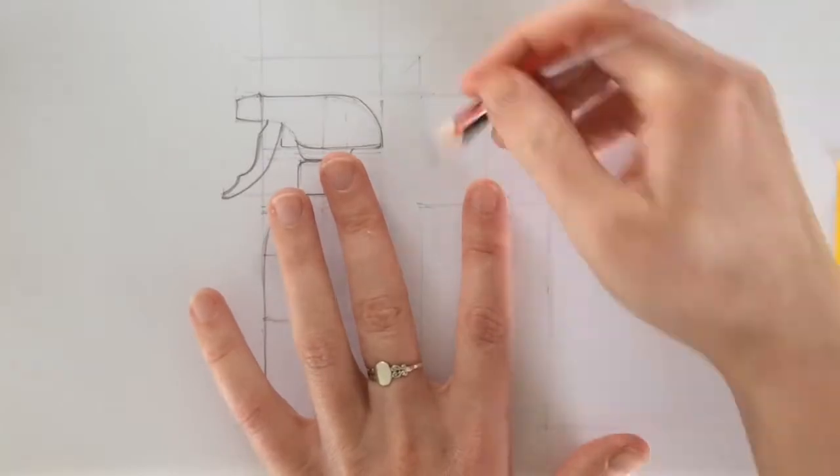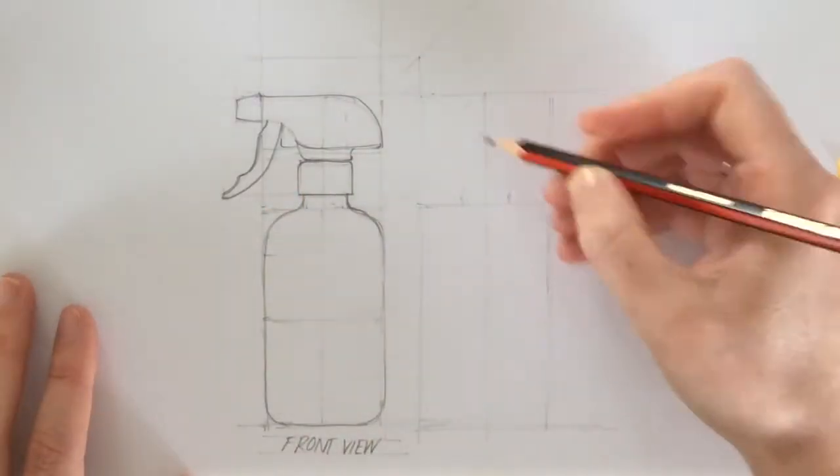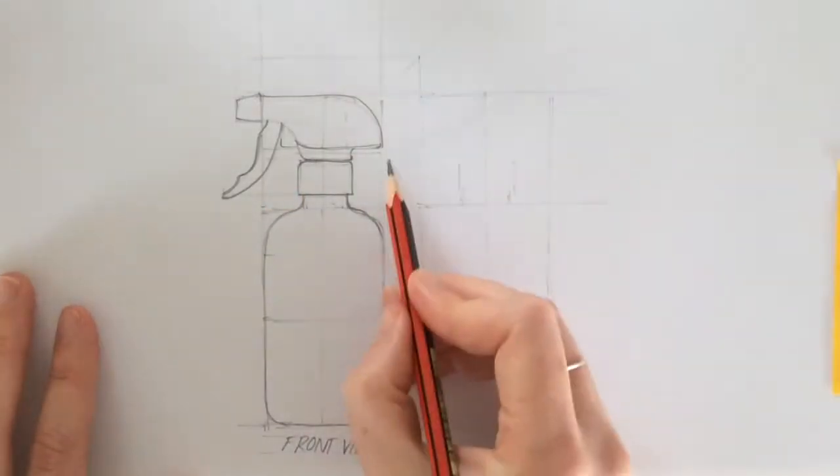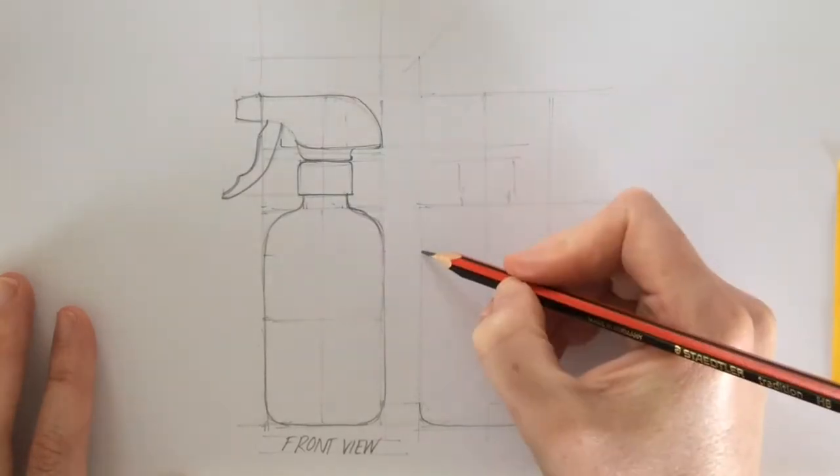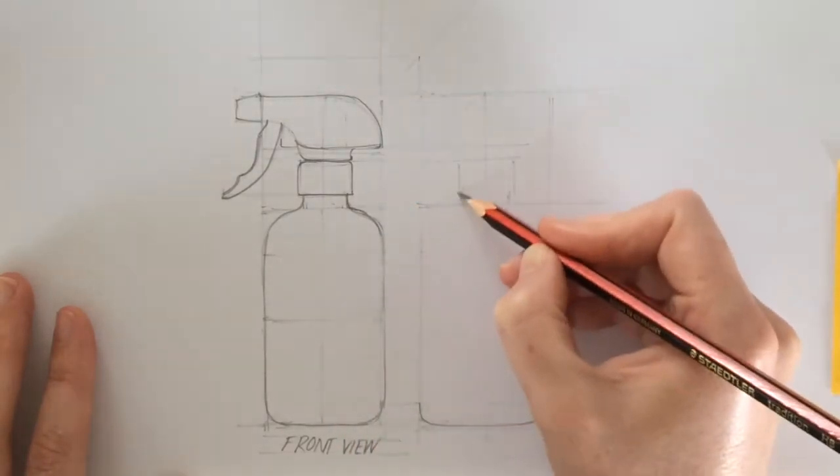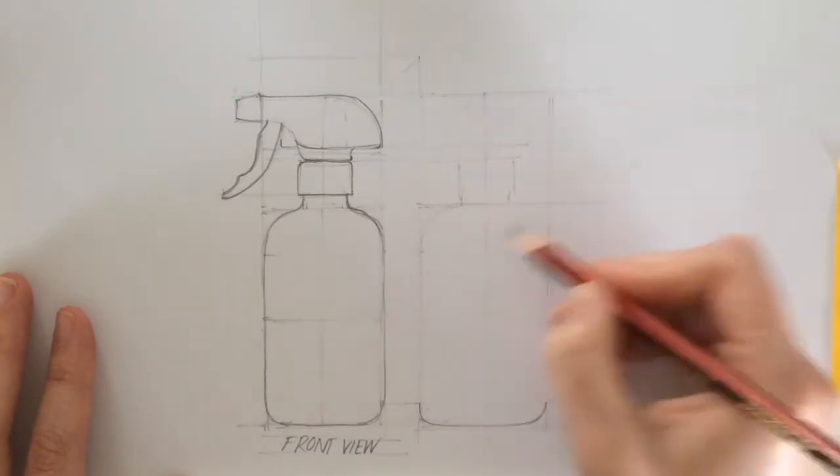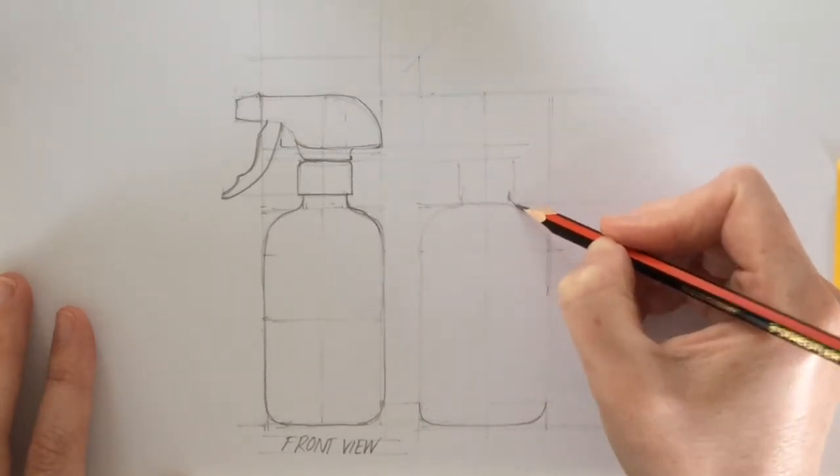From the centre line I can start to put in the next elements that are essentially a repeat. So the bottle cap kind of nozzle that the spray bottle nozzle goes on top of, I can repeat that, and then the curves of the top of the bottle also need to be repeated.